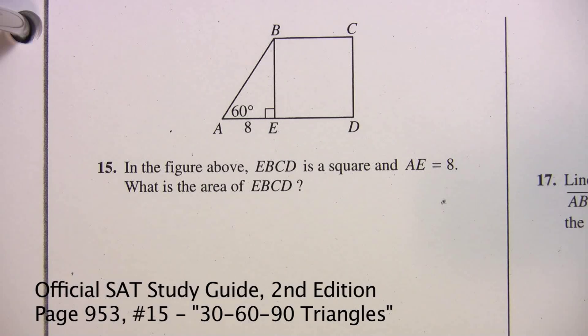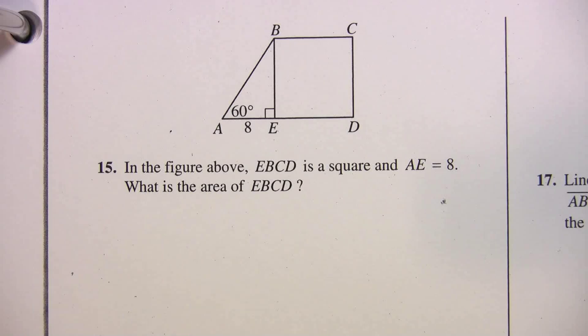Okay, I want to go over triangles with you guys. It's a real popular shape on the SAT. You got to know the ratios, especially for the 30-60-90 and the 45-45-90. We're going to do one for the 30-60-90. So we're on page 953. This is number 15.